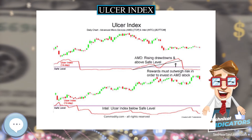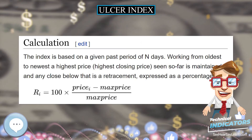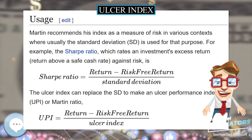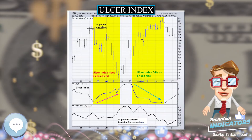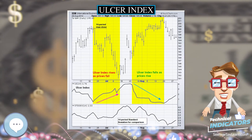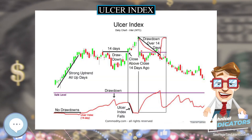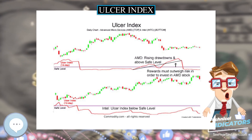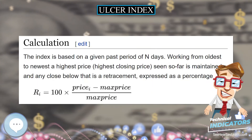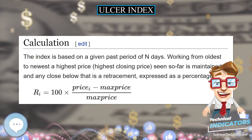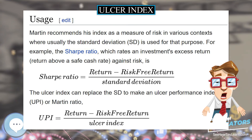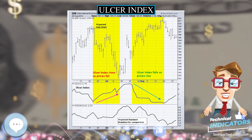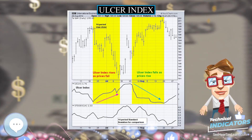Martin recommends his index as a measure of risk in various contexts where usually the standard deviation is used. For example, the Sharpe ratio, which rates an investment's return above a safe cash rate against risk, can use the Ulcer Index in place of standard deviation to make an Ulcer Performance Index (UPI), also called the Martin ratio. In both cases, annualized rates of return would be used, net of costs, inclusive of dividend reinvestment. The index can also be charted over time as a technical analysis indicator to show stocks going into ulcer-forming territory.